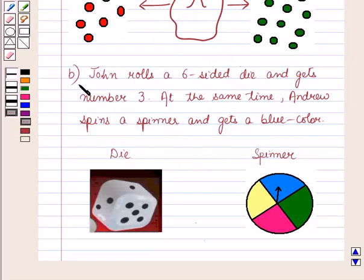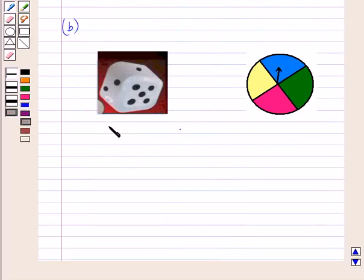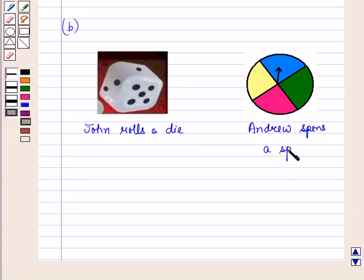Now let us start with the B part. Now in the B part it is given that John rolls a die and Andrew spins a spinner. Now a number drawn in rolling a die has nothing to do with spinning a spinner. This means both events are independent.